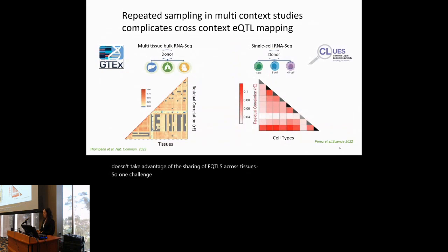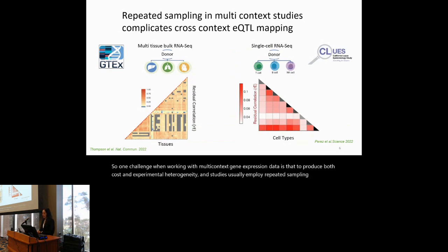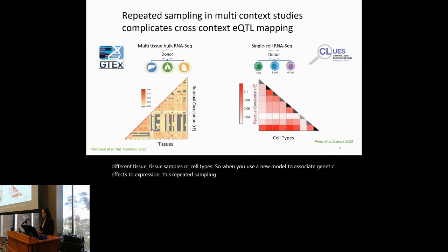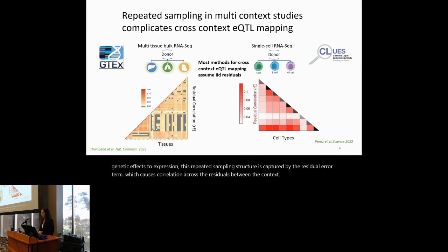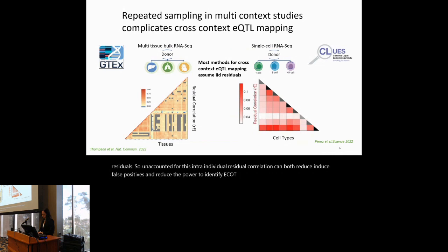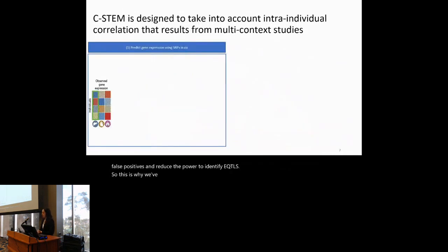The main challenge with multi-context gene expression data is that studies usually employ repeated sampling to reduce cost and experimental heterogeneity — as seen in GTEx and CLUES, where the same individual contributes multiple tissue samples. When using a linear model to associate genetic effects with expression, this repeated sampling is captured by the residual error term, causing correlation across residuals between contexts. Most cross-context EQTL mapping methods assume independent, identically distributed residuals, and failing to account for intra-individual correlation can induce false positives and reduce power. This is why we developed CSTEM.